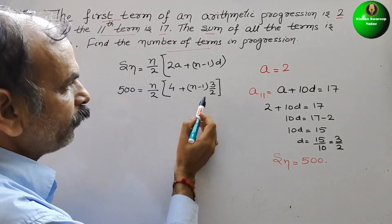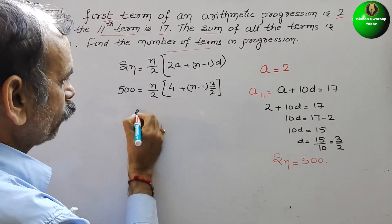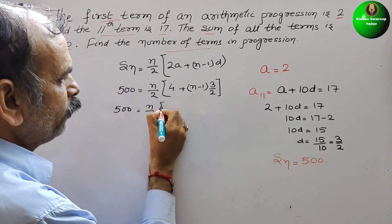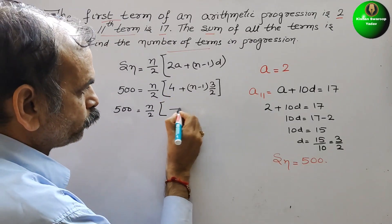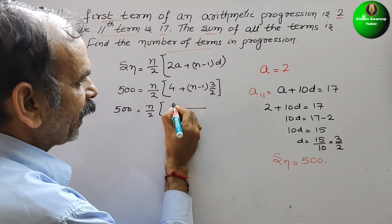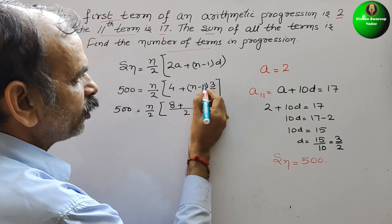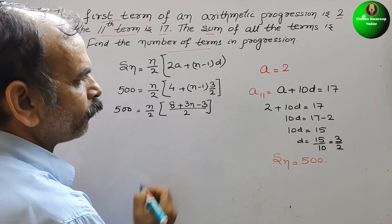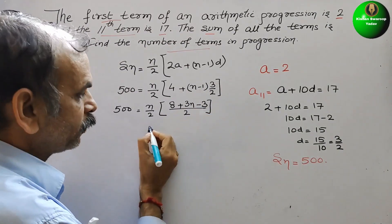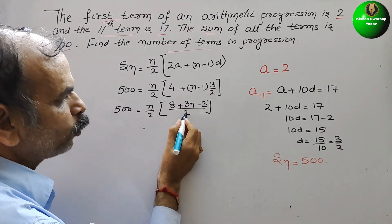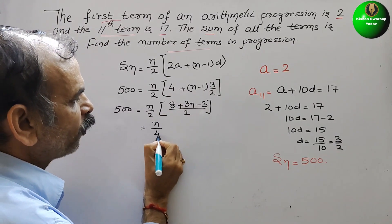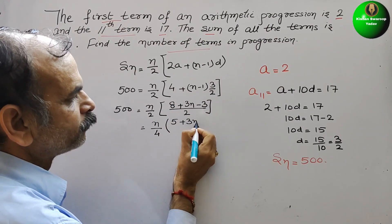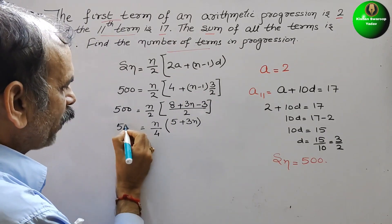Now, here we will take LCM. So we will get 500 is equal to n by 2, so LCM is 2. So we will get 8 plus 3 into n is 3n minus 3. Solve this. So, we will get here 2, so here we will get n by 4 and here 8 minus 3 is 5 plus 3n, and here comes your 500.